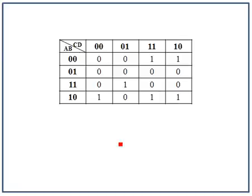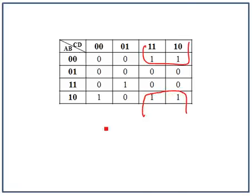Let's look at another KMAP — four variables. What's the largest group here? We need to remember that the KMAP is continuous — it's almost like a cube, not just flat. So I can group these two cells with these two cells over on the other side. What's common? A changes. B is 0, so this is B-bar. C does not change, so that's C. D changes across these two columns, so that's all we're left with.